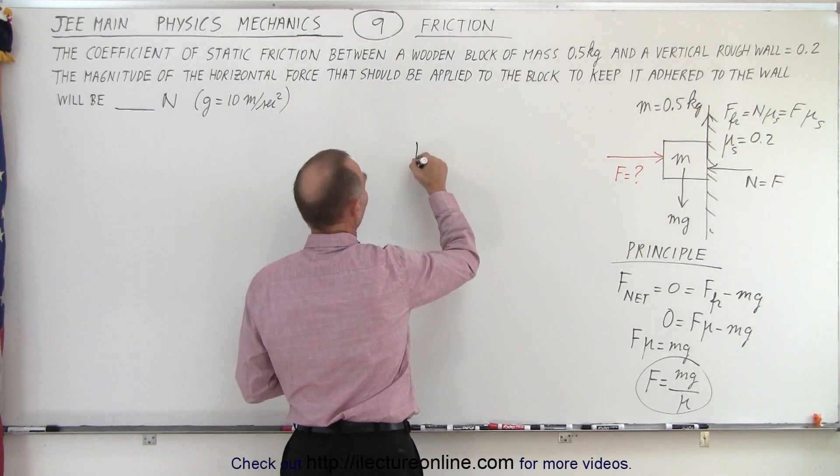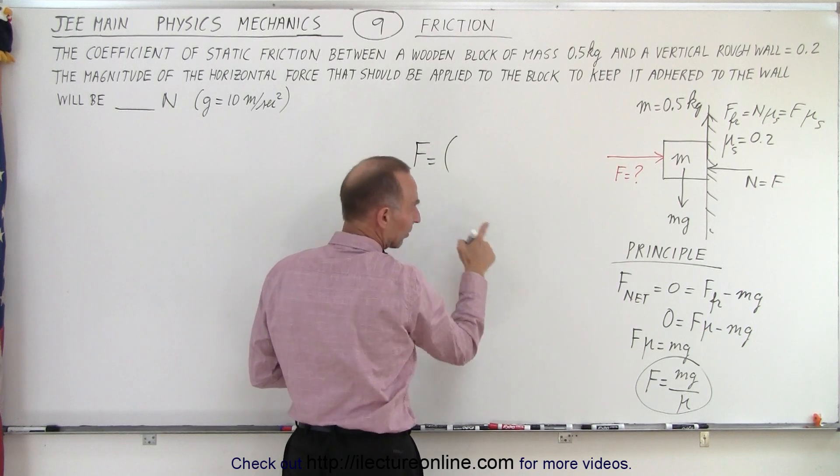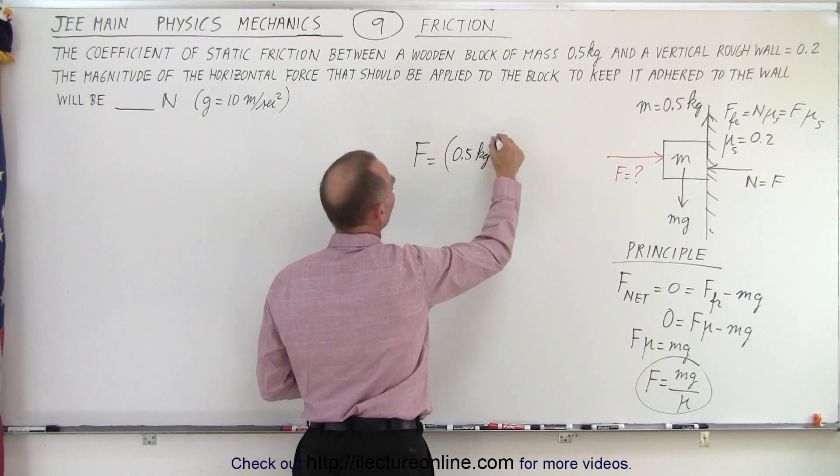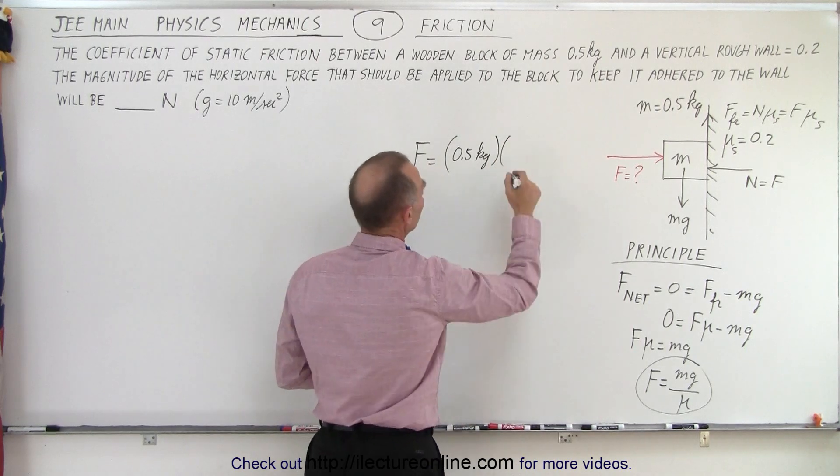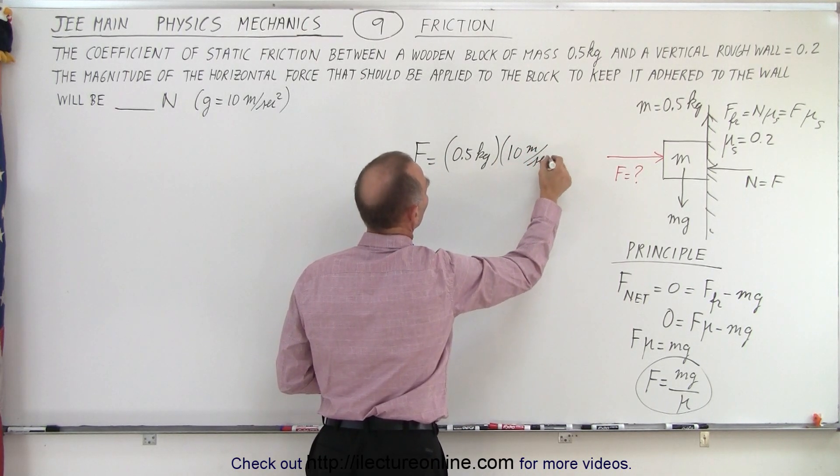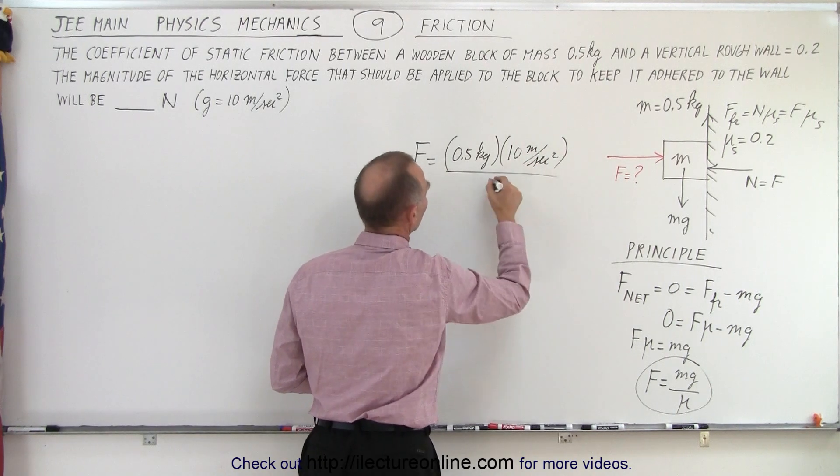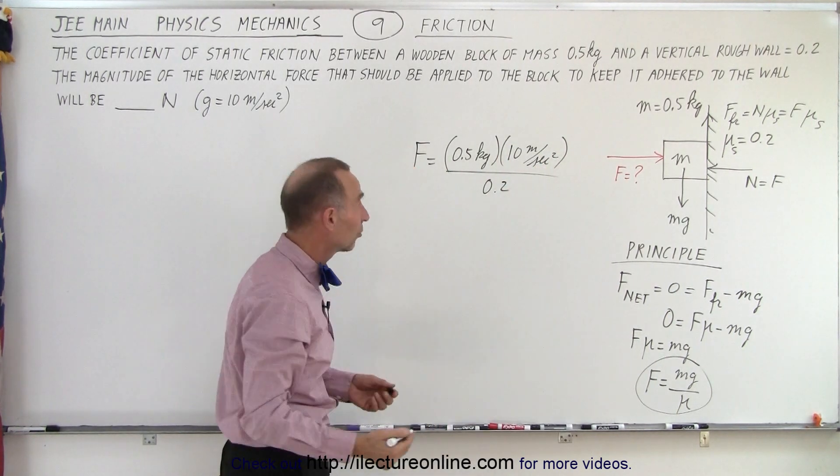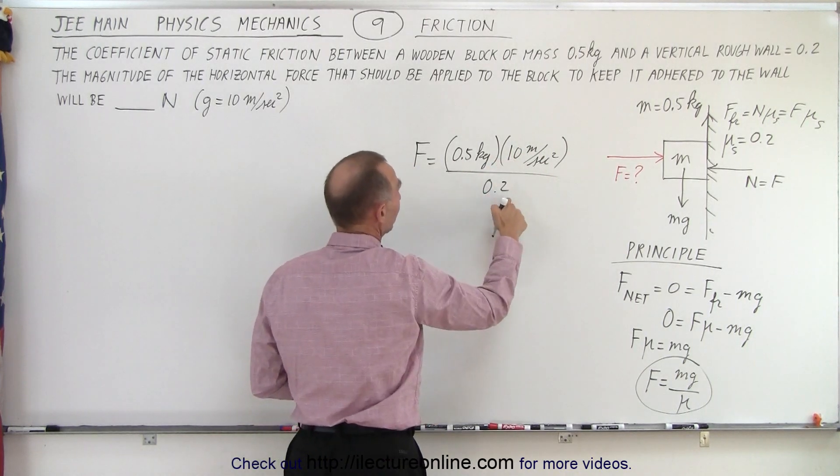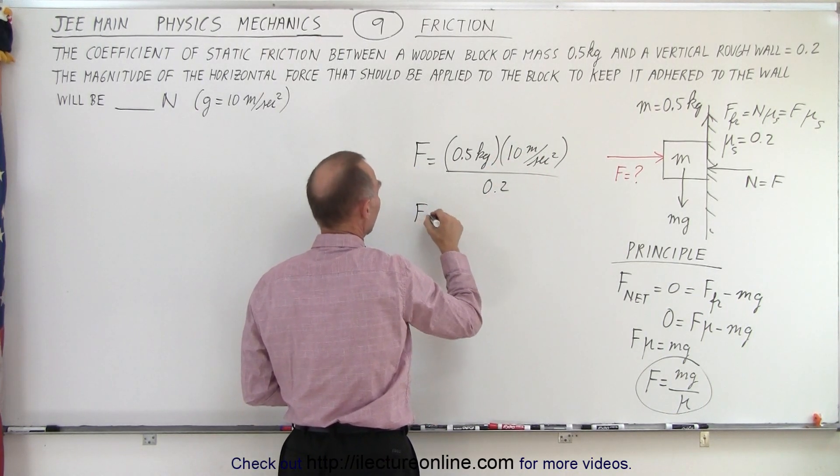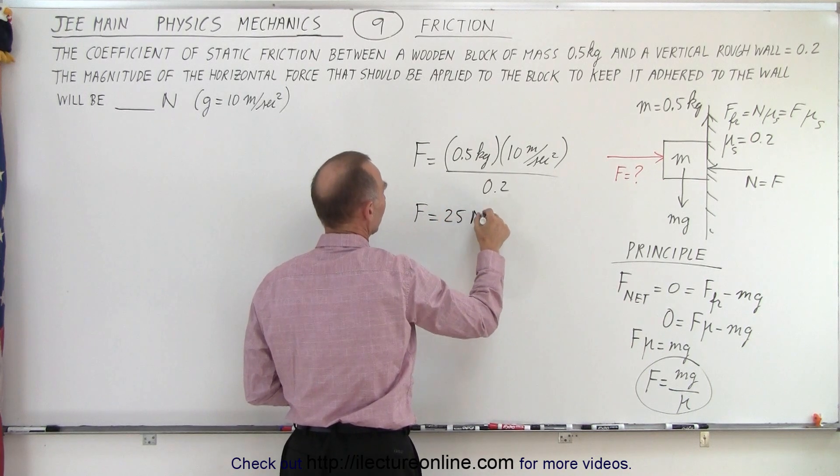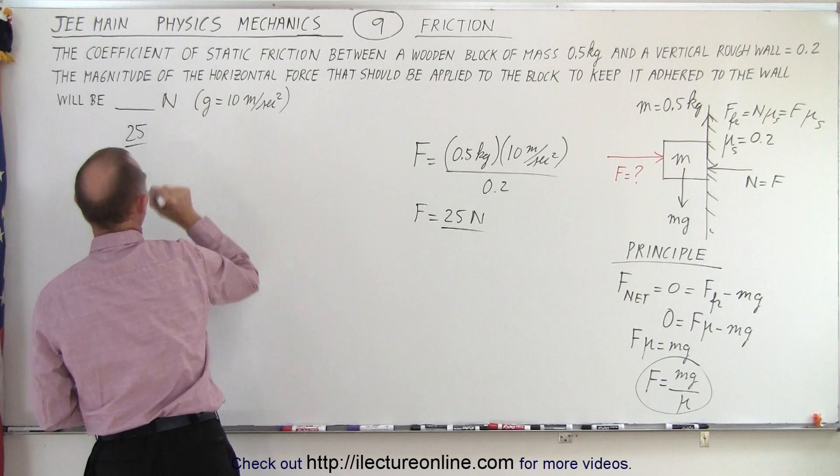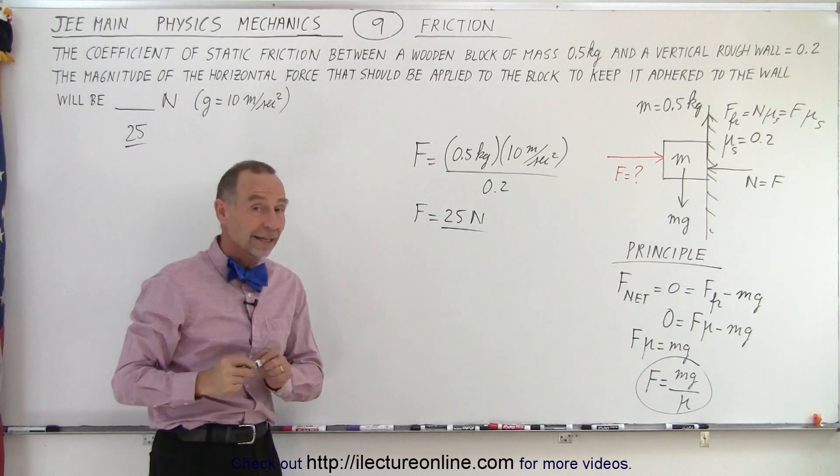So, plugging in the numbers, f is equal to the mass, the mass is 0.5 kilograms, times g, which is 10 meters per second squared, divided by mu which is 0.2. Notice kilograms, meters per second squared gives us newtons. That's 5 divided by 2. That's the same as multiply times 5. So f equals 25 newtons. So the answer we plug in here would be 25, and that is how it's done.